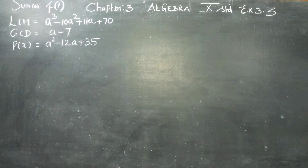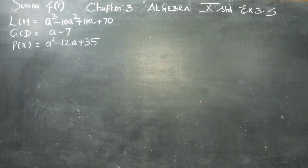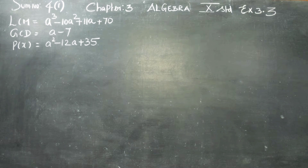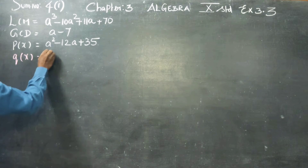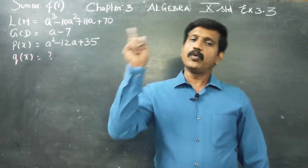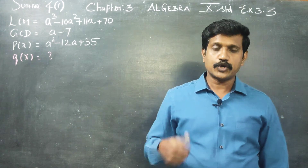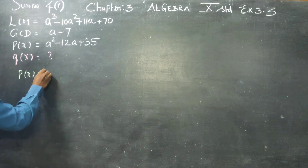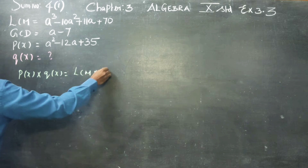One of the polynomials, P of X, is equal to A squared minus 12A plus 35. Find the polynomial Q of X. What is Q of X? Find Q of X using LCM and GCD. The famous formula is: P of X into Q of X equals LCM into GCD.